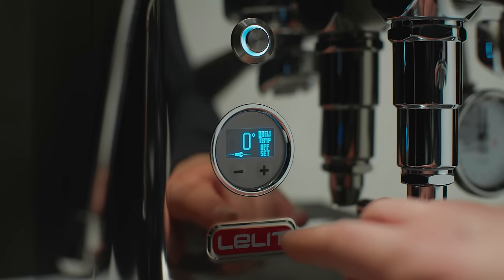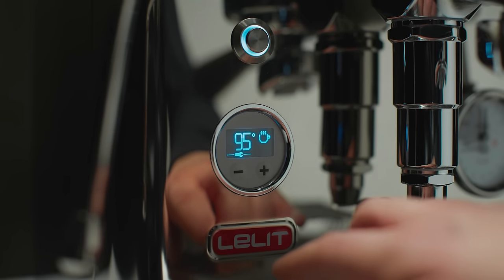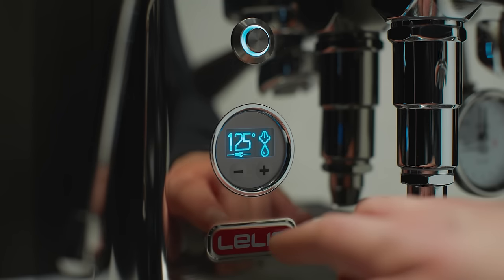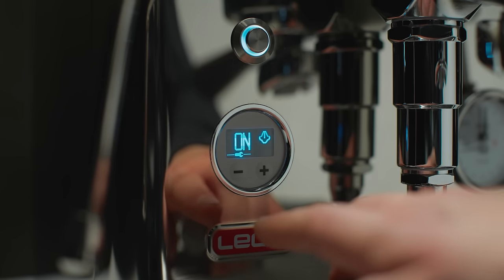Lelit Bianca's display allows you to customize the use of the machine from the temperature measurement scale to the temperature control of coffee and steam to the type of extraction with or without pre-infusion or low flow.